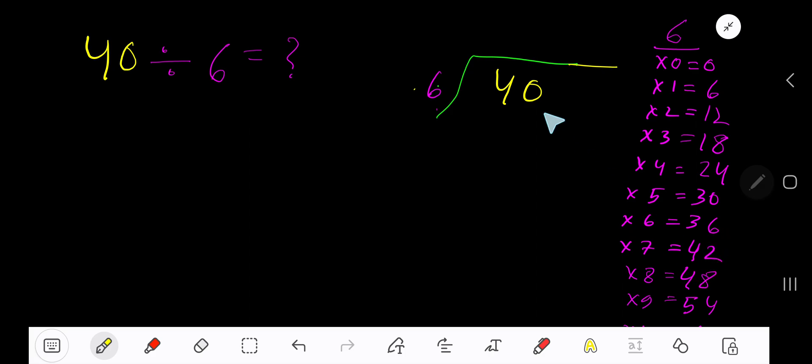6 goes into 4 how many times? 0 times, as 4 is less than 6. 0 times 6 is 0, subtract 4. Bring down the next digit. 6 goes into 40 how many times? 7 times is 42 which is greater, so 6 times 6 is 36. Subtract to get 6 remainder 4.